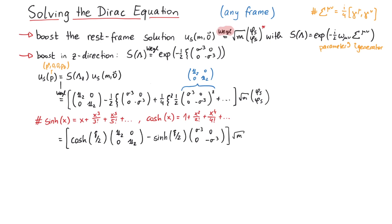And this gets multiplied onto the rest-frame bispinor. We can write both terms inside one matrix and then distinguish between S equals 1 or 2.